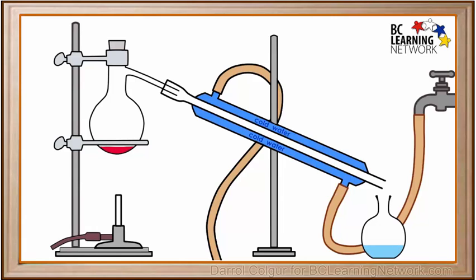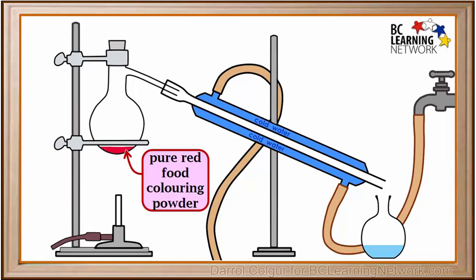We've now finished the process. We have pure red food coloring powder in the flask on the left, and pure water in the flask on the right. Both of these came from the original solution we started with in the flask on the left.